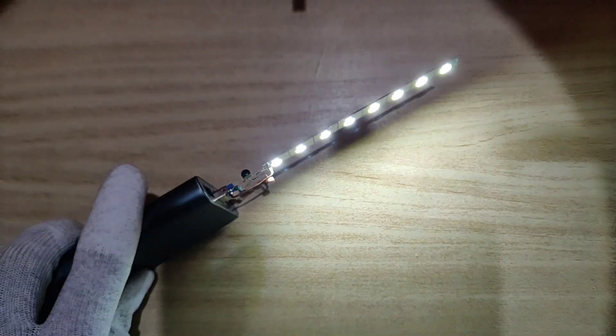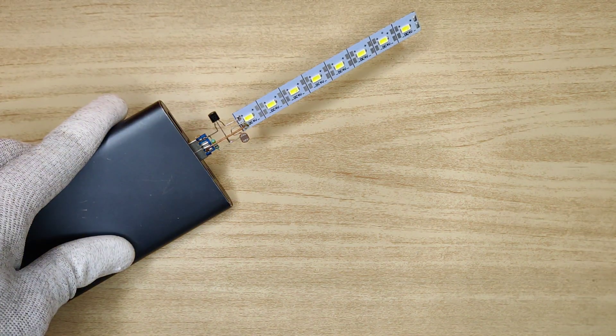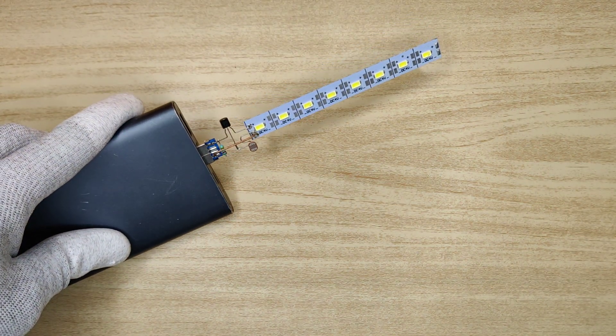This circuit can be useful as street light, garden light and also as automatic room light to turn on light automatically when there is dark, and turn off automatically when there is light.